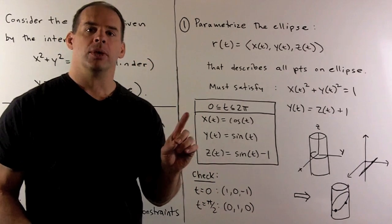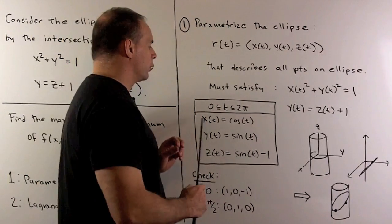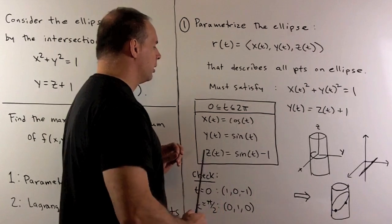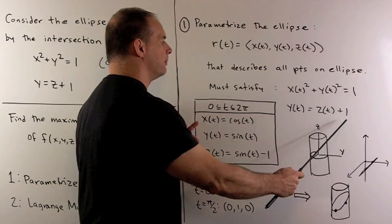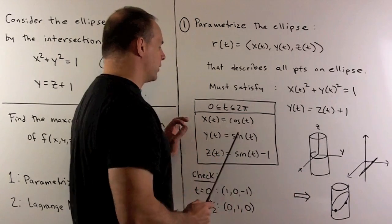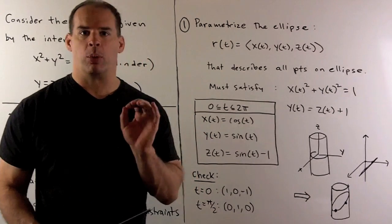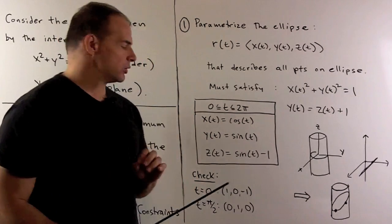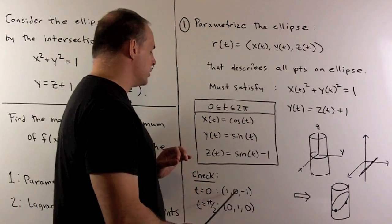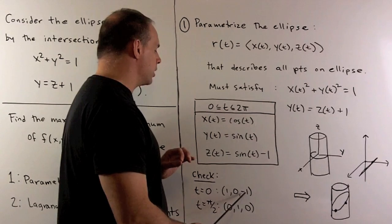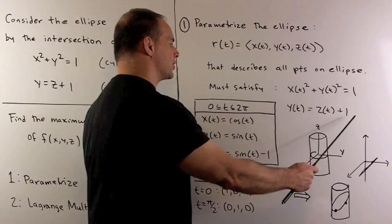Two ways to check your work: take your functions and put them into each equation to make sure they're satisfied — that's pretty clear here. You can also check points. For instance, if I took t equals 0, I get the point (1, 0, −1), and I could just check that point in our equations.